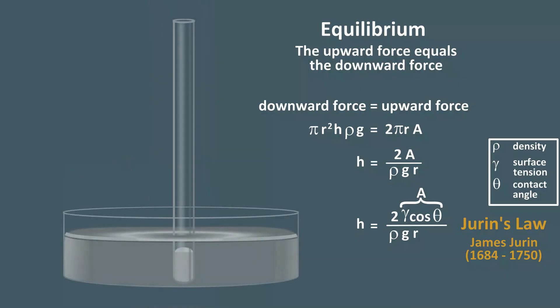Jurin's Law is not limited to water. It can be observed in other liquids too, even mercury. When a glass tube is placed in mercury, the meniscus is actually below the level in the reservoir.